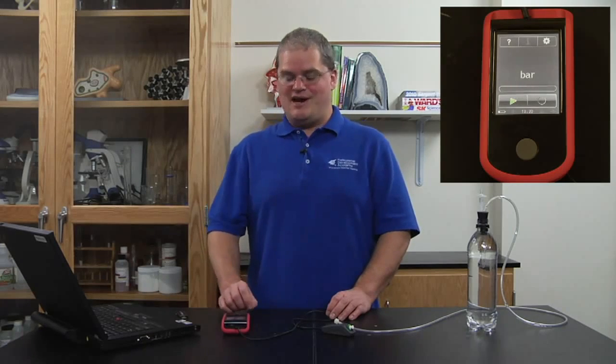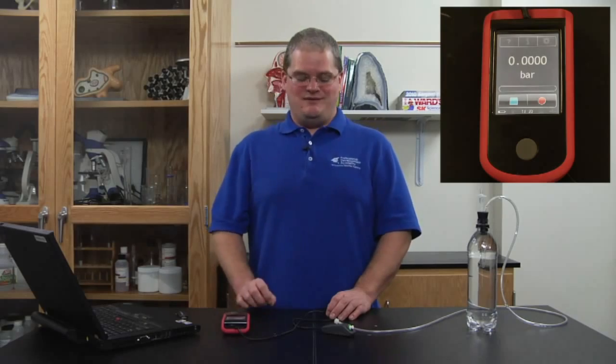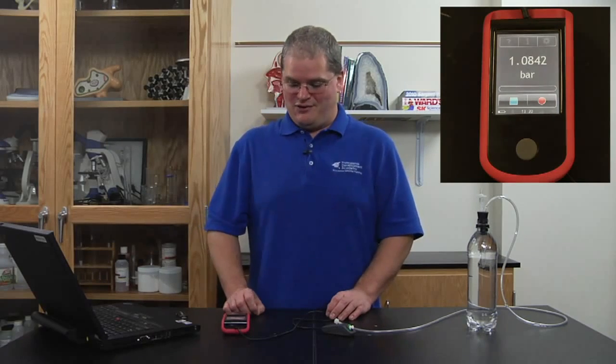In order to begin measuring data, you want to push the green button on the home screen and you'll immediately begin to measure the gas pressure of the room. Currently, you can see the gas pressure in the room is 1.08 bars.